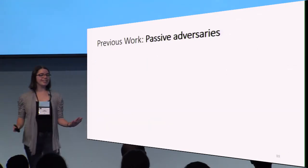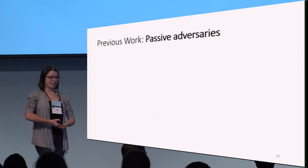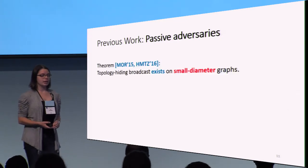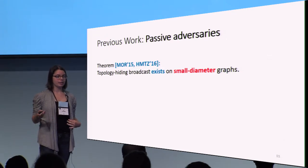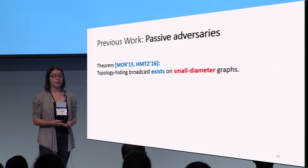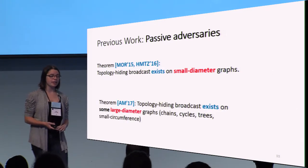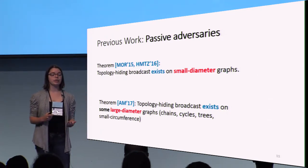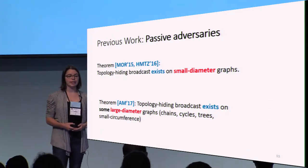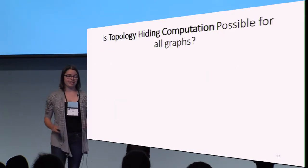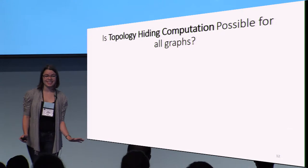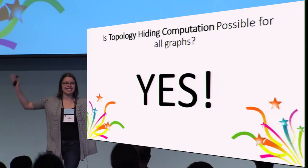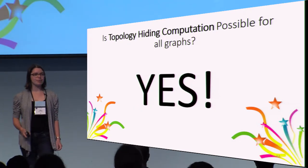However, the good news is we can get some results. We already have some results against passive adversaries. In 2015 and 2016 there were results on getting topology hiding broadcast on small diameter graphs. And then earlier this year, Akevia and Moran showed that you could get topology hiding broadcast on some large diameter graphs, including chains, cycles, and trees. But the question remained open: is topology hiding computation possible for all graphs? Well, I wouldn't be standing here if the answer wasn't yes, it is. And that brings us to our formal results.